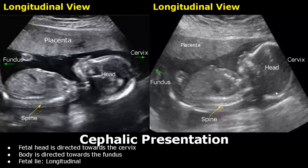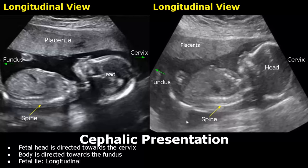Fetal lie is the relationship between the long axis of the fetus and the mother's spine. In these images, a longitudinal view is taken and the fetus is also appearing longitudinally inside the uterus — so this is a longitudinal lie. The fetal spine is oriented parallel to the mother's spine.